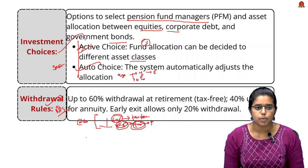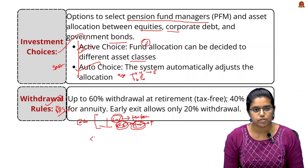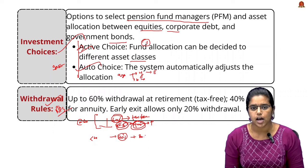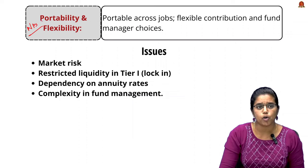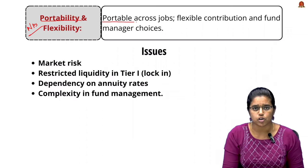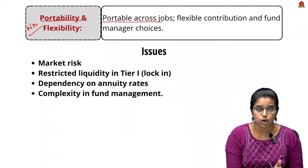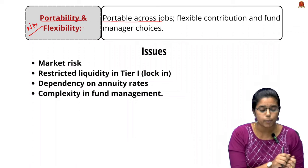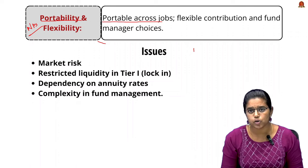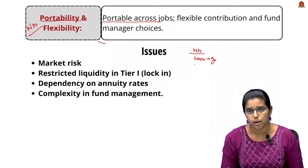Another key feature of the NPS is portability — the account is portable across jobs, allowing the subscriber to continue with the same account even after changing jobs or switching from the government to the private sector. The NPS was first introduced in 2004 covering only government employees, and in 2009 it was extended to cover private sector employees as well.